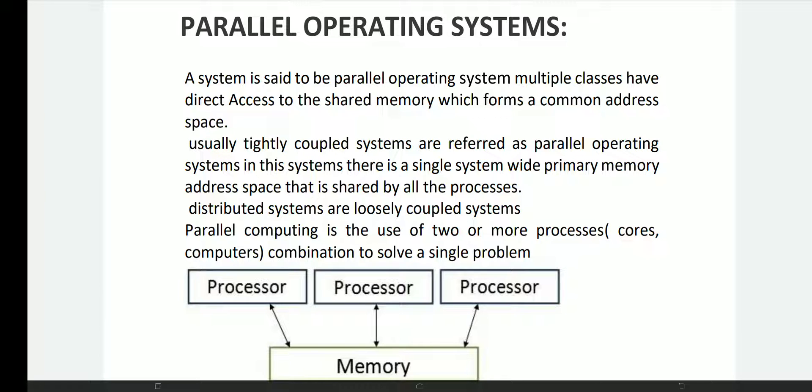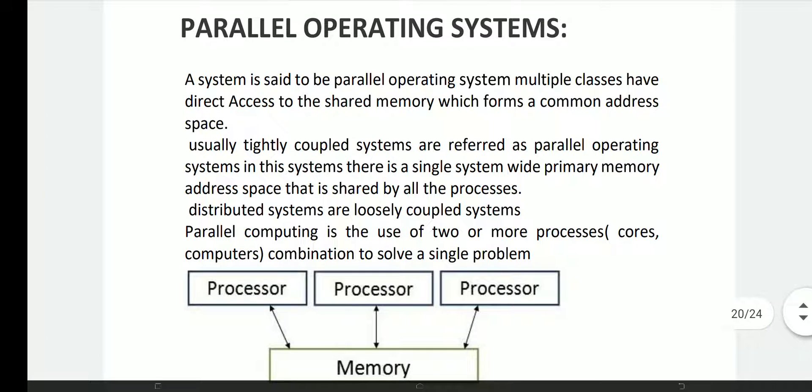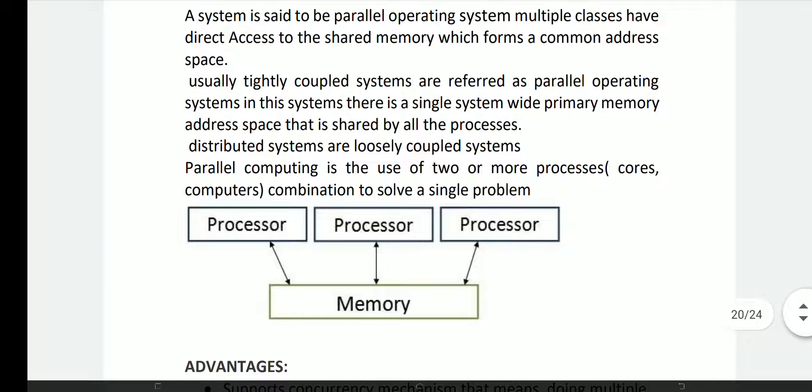Hi friends, it is Manoj. Today's topic is types of operating systems: parallel operating system. A system is said to be a parallel operating system when multiple classes have direct access to the shared memory which forms a common address space with multiple processors and multiple CPUs.